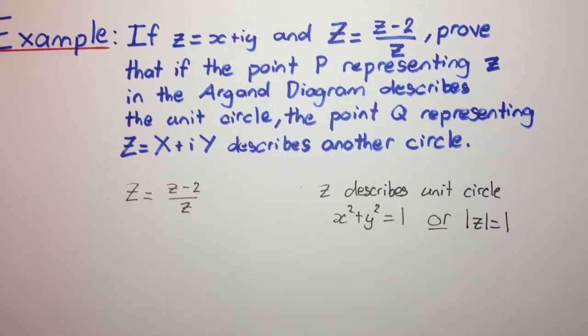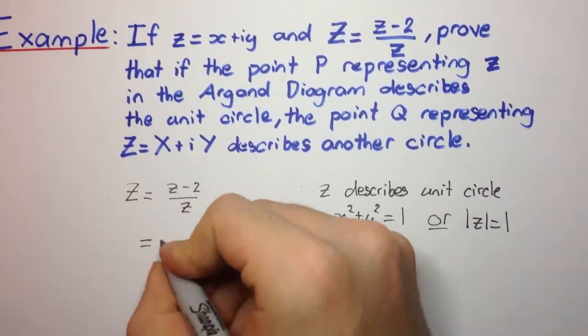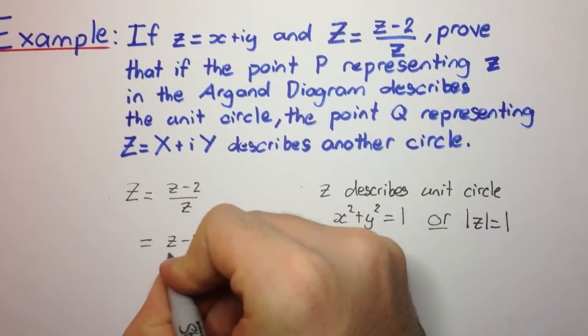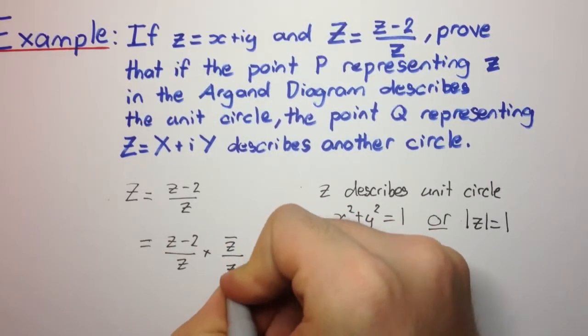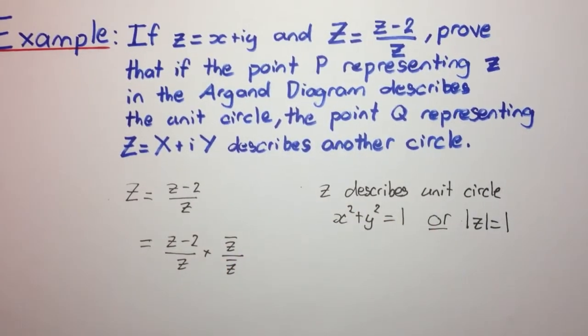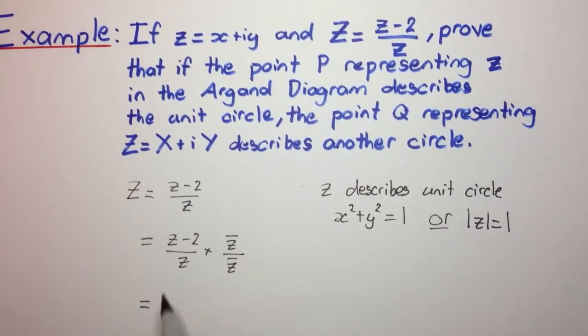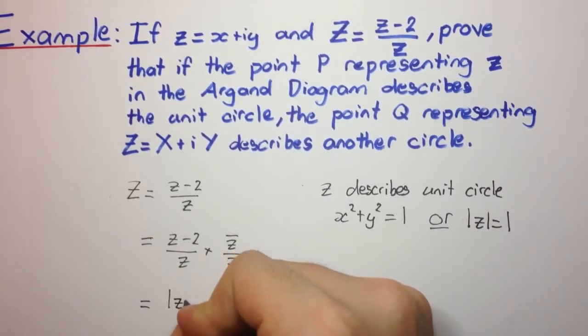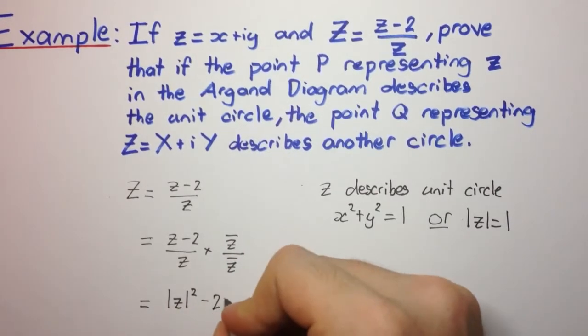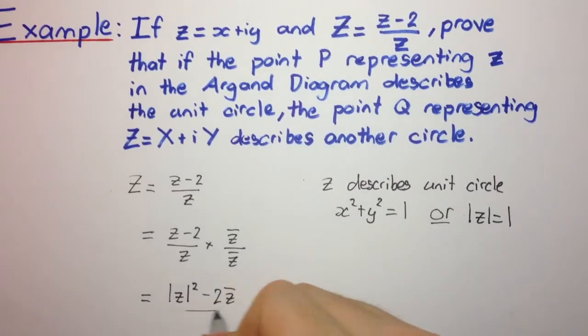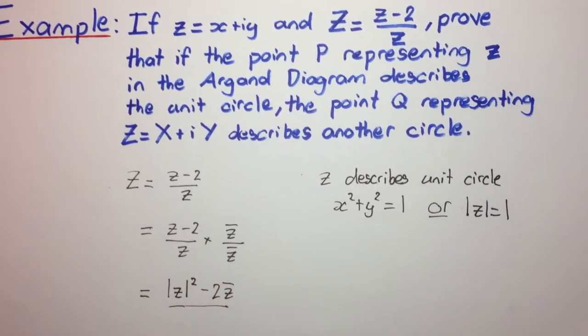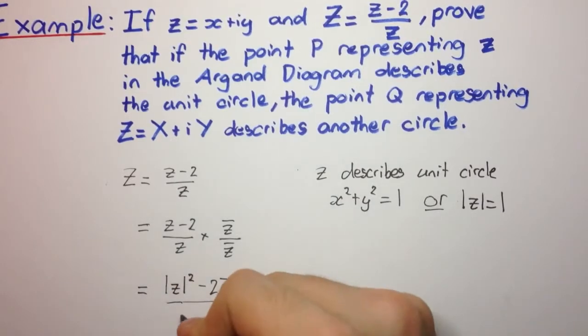Let's manipulate this so we can simplify it a little bit. If we multiply the numerator and the denominator by the conjugate of little z divided by the conjugate of little z, this will help us in our manipulation. Now, on the top we're going to have z times z bar, which is the modulus of z squared, minus 2 times the conjugate of z. And on the denominator we're going to have z times z bar again, which again is the modulus of z squared.